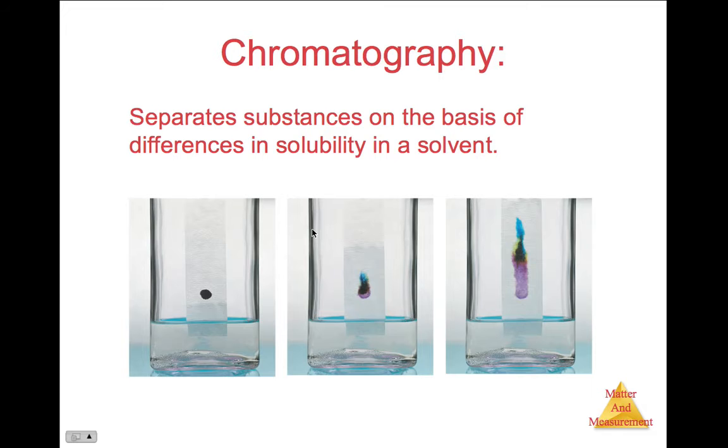The third way to separate substances is something called chromatography. This separates substances on the basis of the differences in solubility of a solvent. This is a blotch of black water-soluble marker. The water moves up the filter paper and different colors that make up the black marker separate at different speeds.